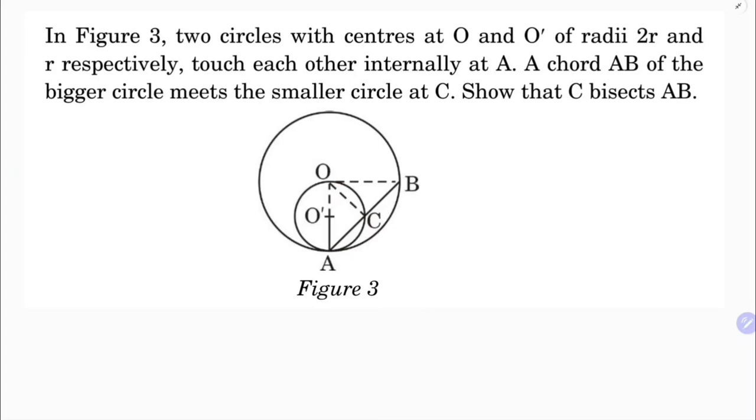In figure 3, two circles with center O and O' of radii 2R and R. OB and OA is 2R, and the small radius O'O and O'A is R.